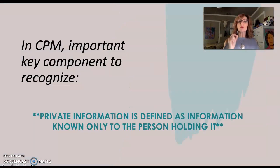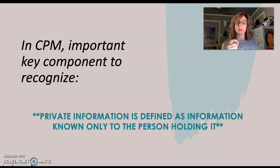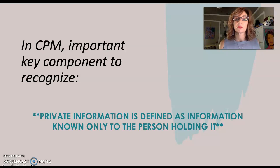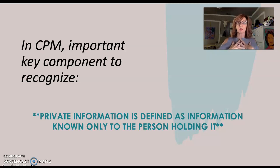What's really important to recognize as we discuss the rules or axioms of this theory is the concept of private information. The information that is defined as private is defined by the person holding it. Private information is information known only to the person holding it, and that person defines it as private.